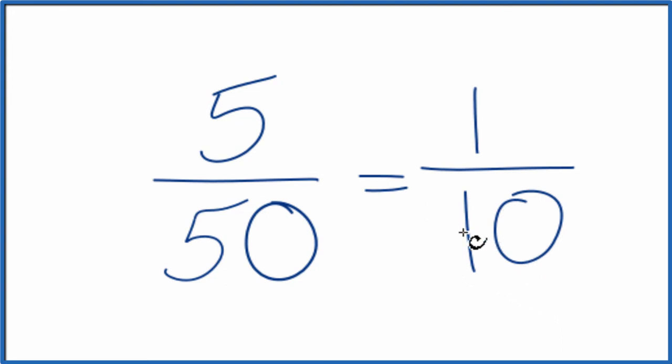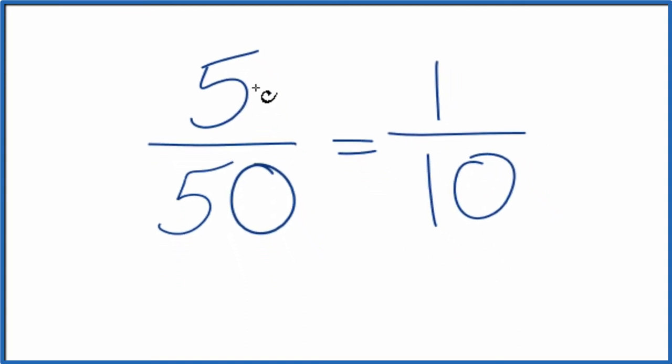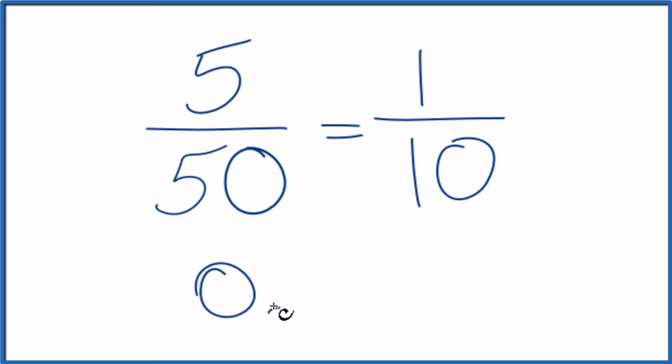So we've simplified or reduced the fraction 5/50 down to 1/10. And again, these are equivalent fractions. If you divide 5 by 50, you get 0.1. If you divide 1 by 10, you get 0.1.